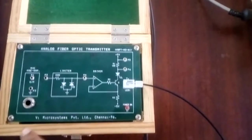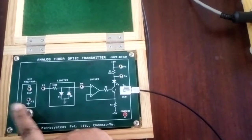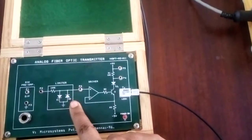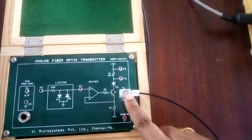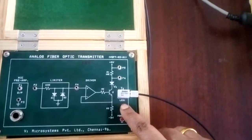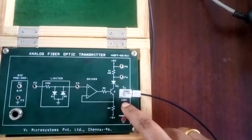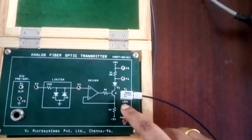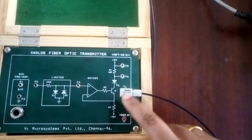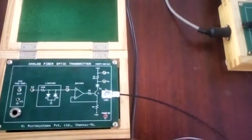So first we are going to see the optical signals. This is the Transmitter. In the Transmitter, there is an LED — the LED light source generates light. This is the Fiber Optic Cable — this is the 1 meter Fiber Optic Cable.